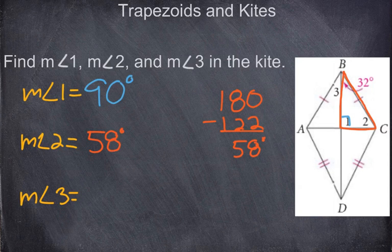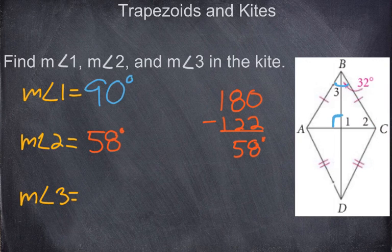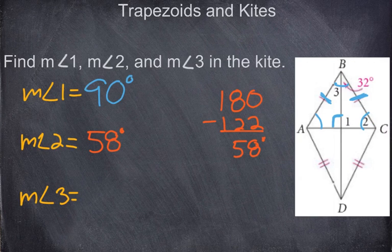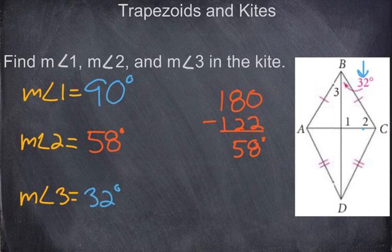Angle 3 is also straightforward. The longer diagonal of a kite bisects the vertex angle. Since both sides of the intersection are 90 degrees and the two adjacent sides are congruent, angle 3 equals angle 1's corresponding piece. If this angle is 32 degrees, then angle 3 is also 32 degrees.